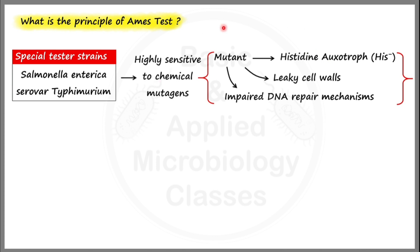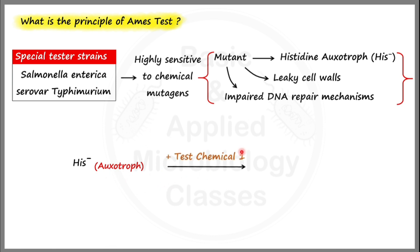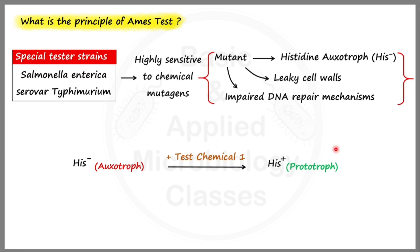Now let's understand the principle of the Ames test by considering two different cases. In the first case, we take the mutant strain of Salmonella — the histidine auxotroph — and treat it with test chemical 1. What we observe is that the histidine auxotroph, in the presence of test chemical 1, gets converted into a histidine prototroph. Initially it was not able to produce histidine, but after contact with test chemical 1, it has regained that ability.